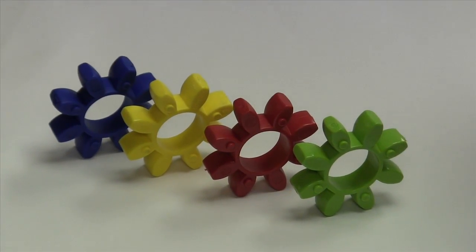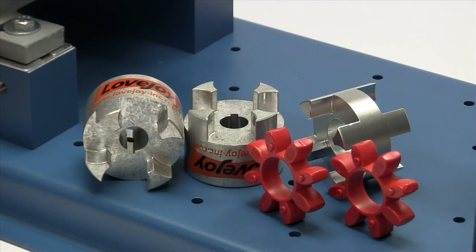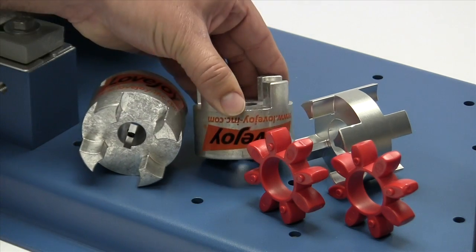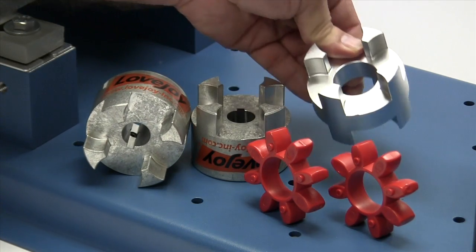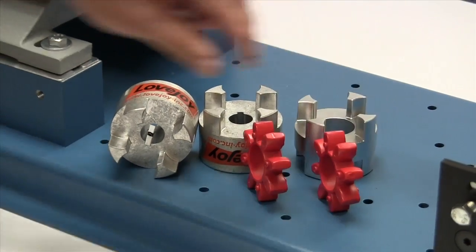Curved jaw spiders are color coded based on the shore hardness and torque capacity of the material. Always inspect the components to ensure the parts are the proper parts that you ordered. Review your application details to ensure that this is the proper coupling to accommodate your application requirements.